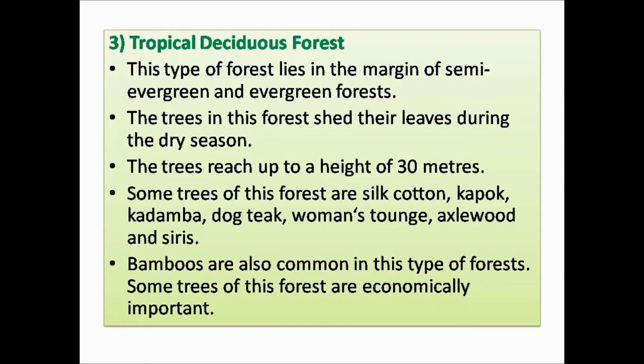The third type is the Tropical Deciduous Forest (Ilayudhir Kadukal in Tamil). This forest lies at the border of semi-evergreen and tropical evergreen forests. The trees shed their leaves during the dry season — the summer season. They grow up to a maximum height of 30 meters. Some trees of this forest are Silk Cotton, Kapok, Kadamba, Dog Teak, Woman's Tongue, Axlewood, and Ceres. Bamboos are also common.